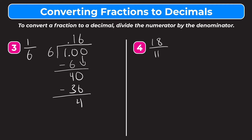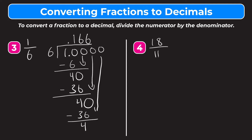Again we don't have a clean zero, so we add another zero and bring it down — we have forty again. Six goes into forty six times. Six times six is thirty-six. Forty minus thirty-six is four. You might be recognizing a pattern here. We keep getting forty and we're never going to get a clean zero. This is going to be a repeating decimal that goes on forever.